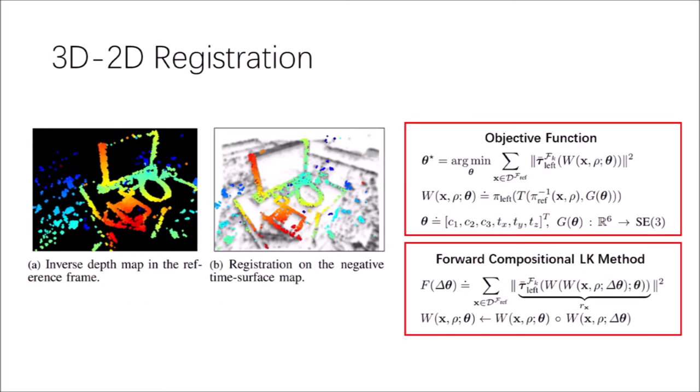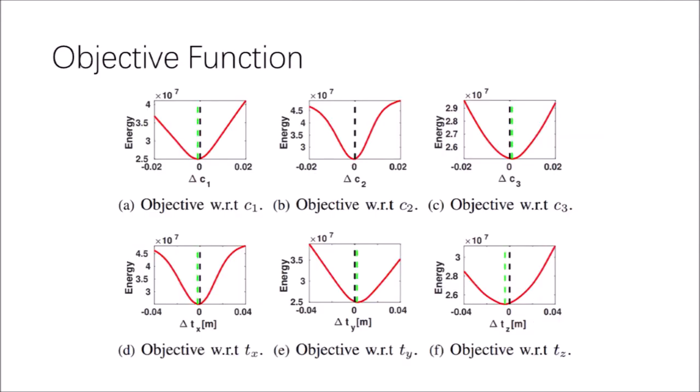Therefore, an implicit data association between the known 3D semi-dense inverse depth map and dark areas in the negative time surface map are established and used for applying the 3D to 2D registration. The problem is formulated with forward composition of Lucas-Kanade method and solved with iteratively reweighted least squares method. We see a unique local minimum residing near the ground truth in each degree of freedom. Therefore, the convergence to optimum is guaranteed as long as the successive estimates are close to each other.